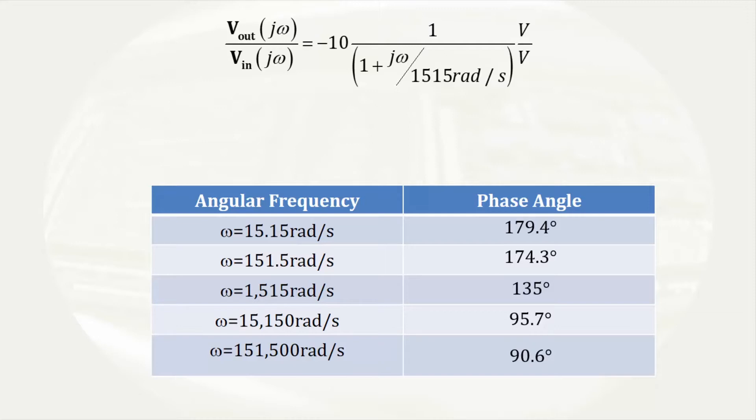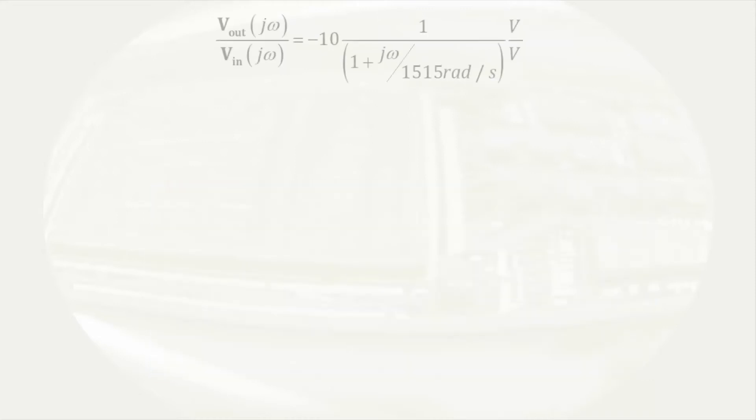Since most of the change occurs in that range, it is likely that the simplest approximation is to draw the phase shift changing over one decade of frequency on either side of the corner frequency.